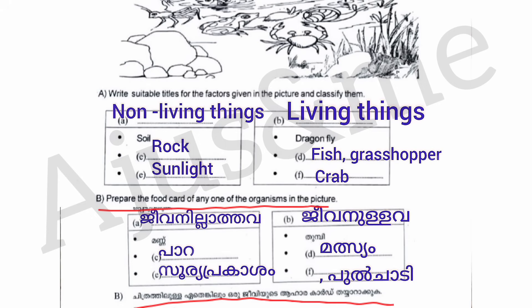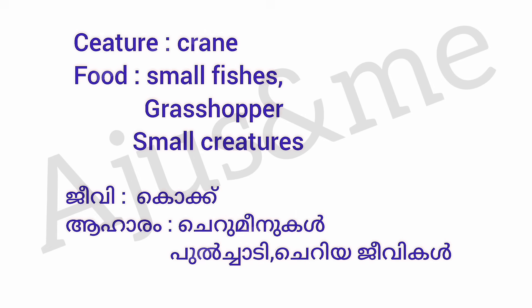Prepare the food card for any one of the organisms in the picture. What is the name of the food? Small fish, grasshopper, small creatures — grasshopper, small creatures, life. This is the food card.